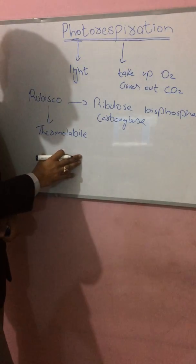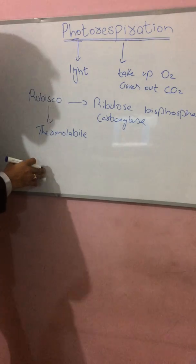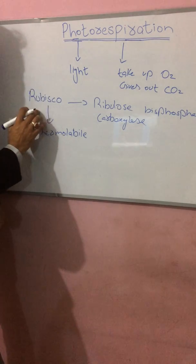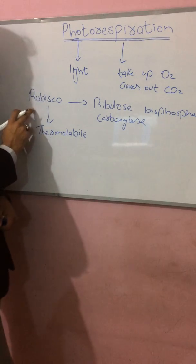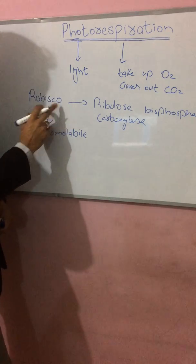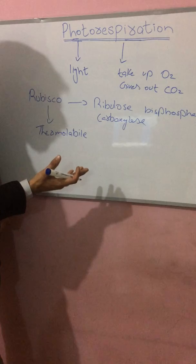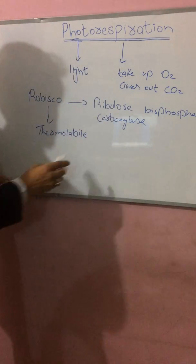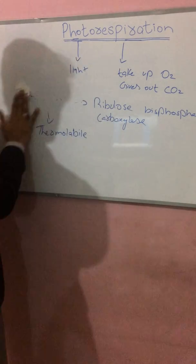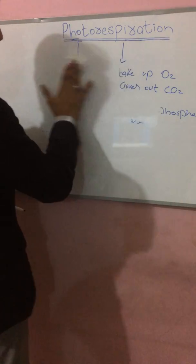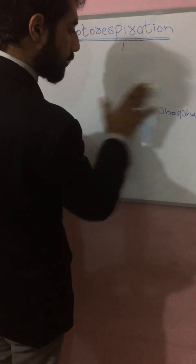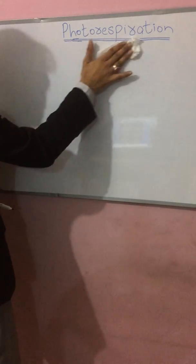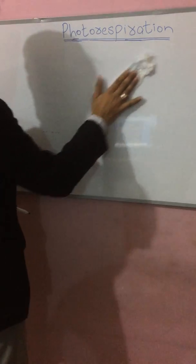When the environment changes, the activity of rubisco depends on environmental factors such as cold or hot conditions. Let's look at the conditions under which it changes its activity.